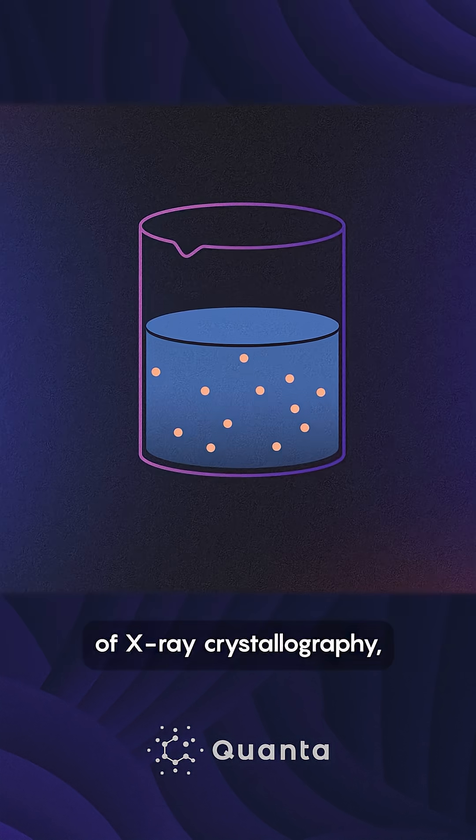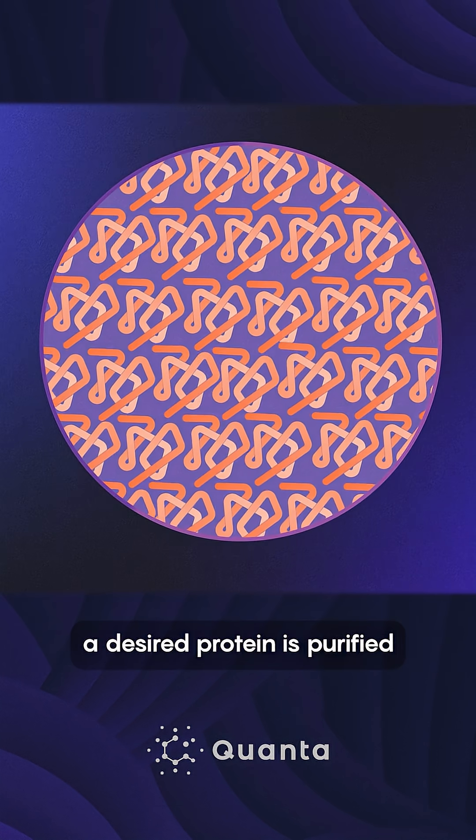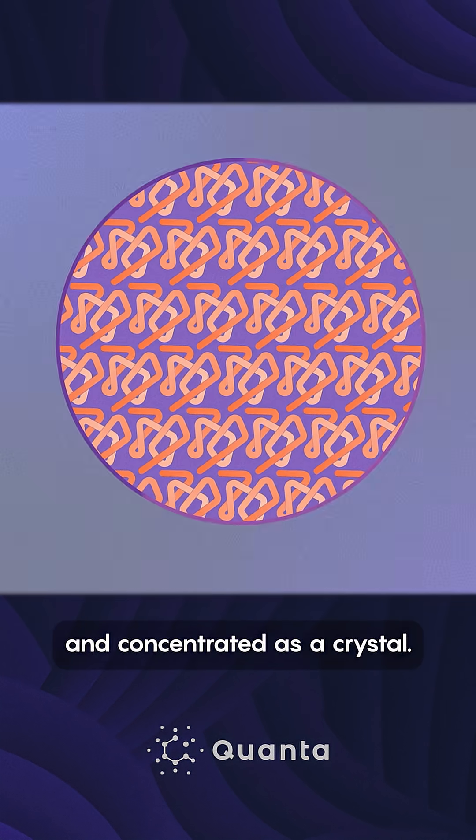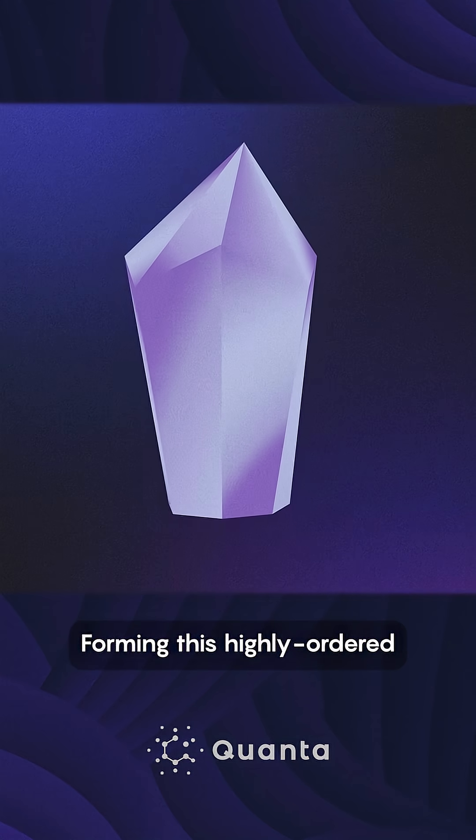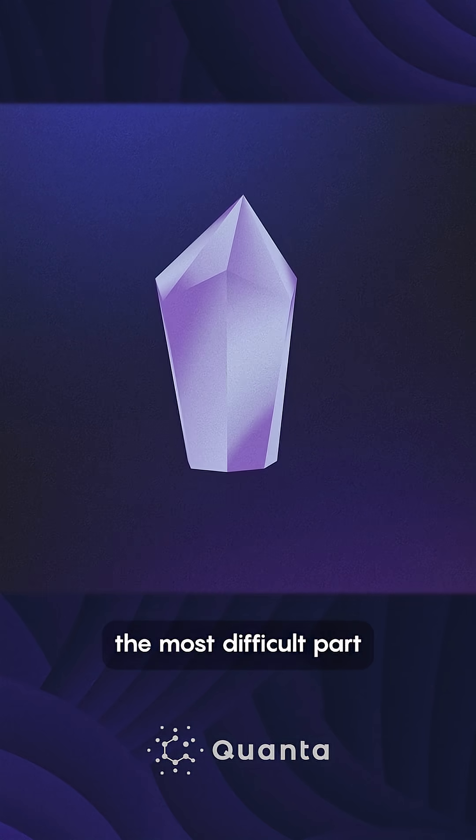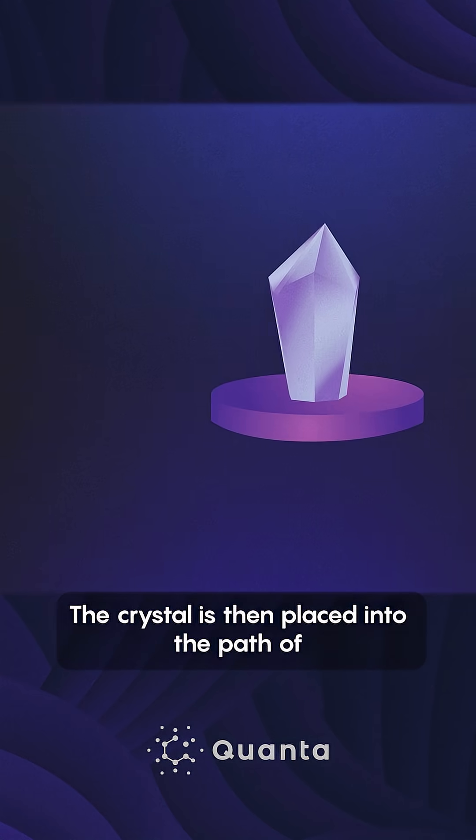In the first step of X-ray crystallography, a desired protein is purified and concentrated as a crystal. Forming this highly ordered array is often the most difficult part of the entire process.